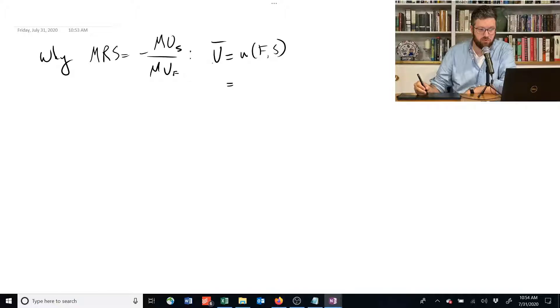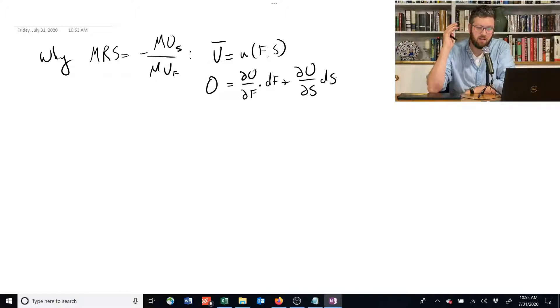But in our case, utility can't move at all. That's the definition of an indifference curve. So if we take the derivative with respect to f and multiply it by a small change in f and add to that, what happens to utility when we make a small change in s and multiply it by a small change in s? They actually have to equal 0. They have to offset each other.